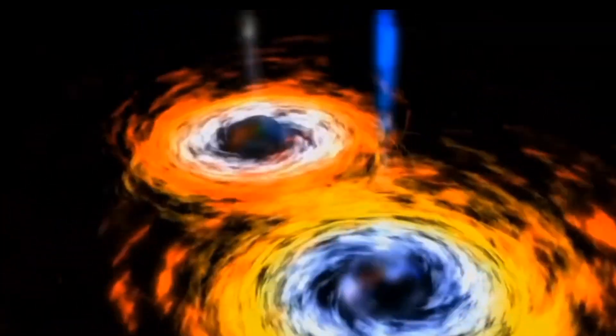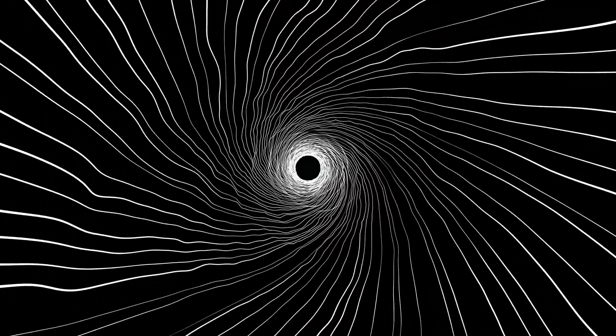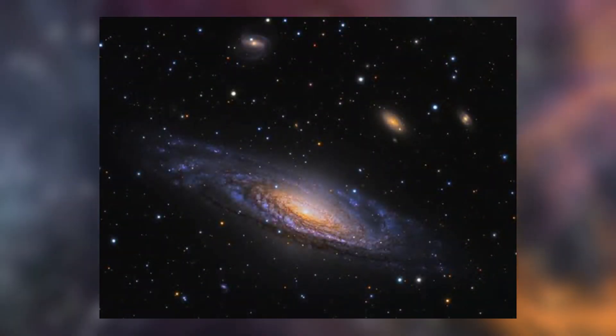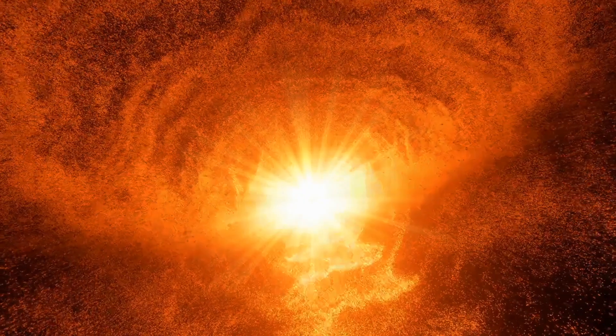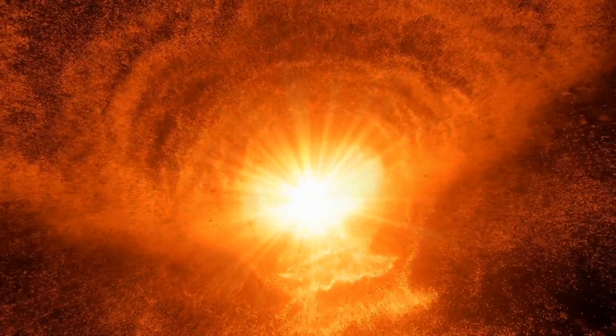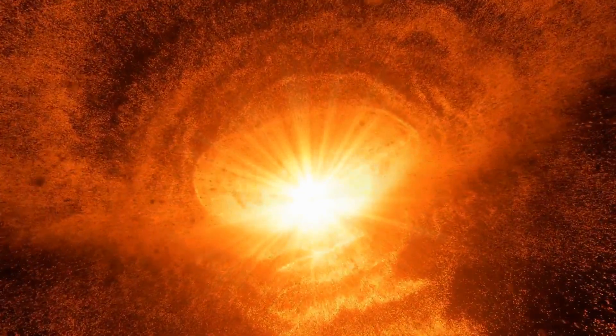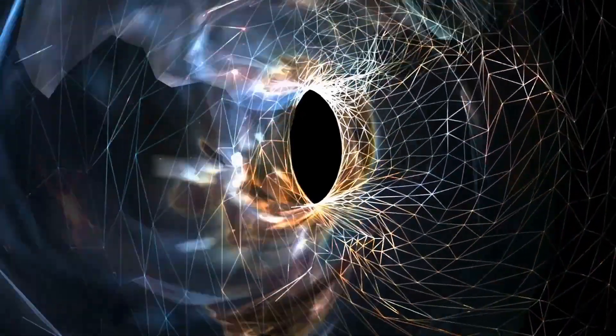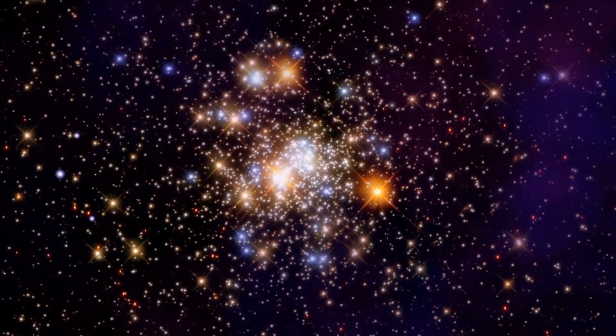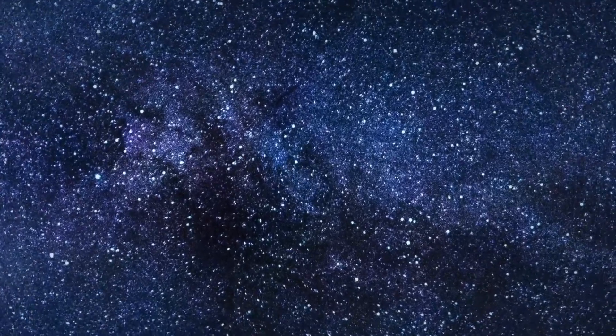They found that primordial black holes could play a major role in the universe by seeding the first stars, the first galaxies and the first supermassive black holes. They also said that their observations indicate that stars, galaxies and supermassive black holes appear very quickly in cosmological history, perhaps too quickly to be accounted for by the processes of formation and growth observed in the present-day universe.